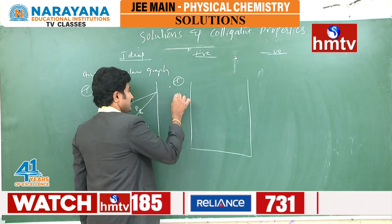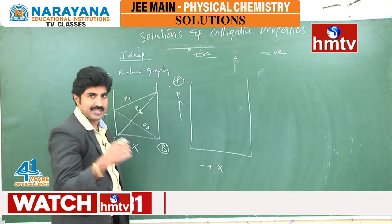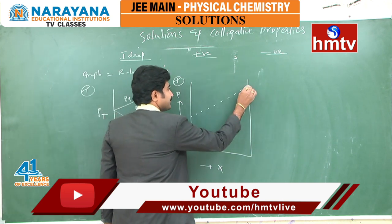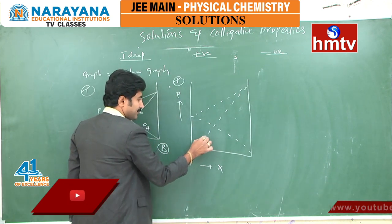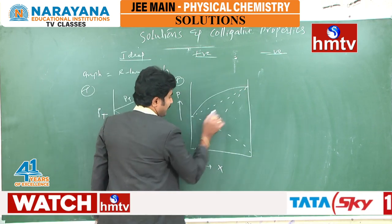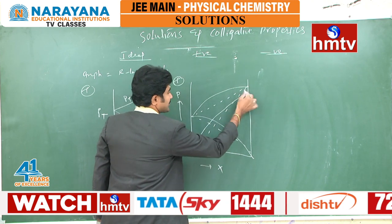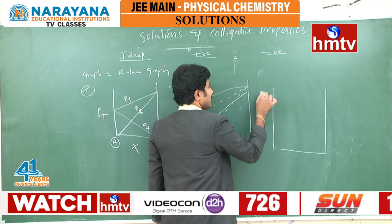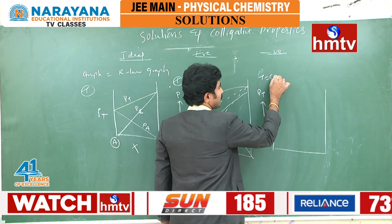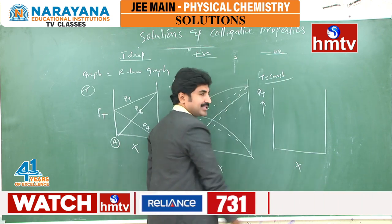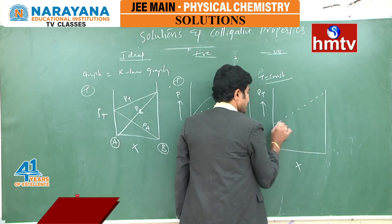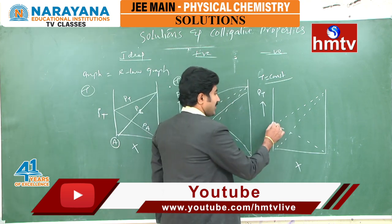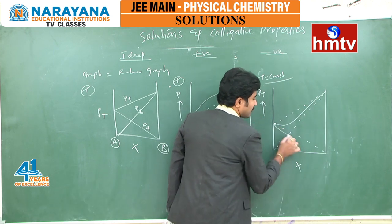Therefore, the resultant graph is somewhat upward compared to the ideal graphs. These are the ideal lines, but the observed experimental graphs show upward curves. Whereas in negative deviation, experimental values are less than the calculated values by Raoult's law. Comparatively to the ideal values — the dotted lines — the observed values are lower, meaning downward curves.